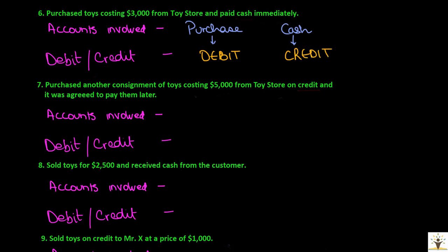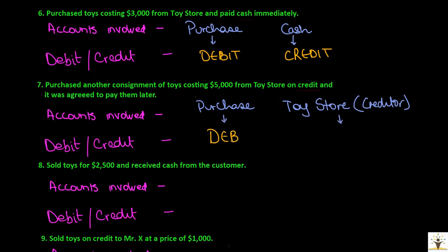Transaction: purchased another consignment of toys costing $5,000 from toy store on credit — agreed to pay them later. The business has again purchased goods but on credit. The first account affected is the purchase account. Since the business is not paying cash, cash account won't be affected. But since it is purchasing goods on credit from toy store, it has to pay toy store in the future — creating a liability, toy store, which is a creditor. Hence, purchase account will be debited. Toy store is a liability and since the liability is increasing, toy store account will be credited.